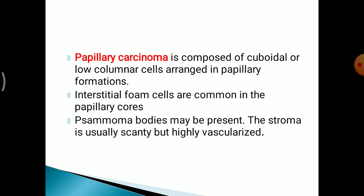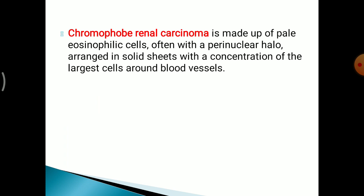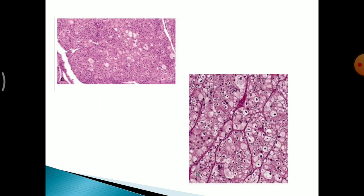Papillary carcinoma is composed of cuboidal or low columnar cells arranged in papillary formation. Interstitial foam cells are common in the papillary cores, and psammoma bodies may also be present. This H&E photograph of papillary renal cell carcinoma shows the papillary architecture. Chromophobe renal cell carcinoma is made up of pale eosinophilic cells often with a perinuclear halo, arranged in solid sheets with concentration of larger cells around blood vessels, showing enlarged irregular cells with pale eosinophilic cytoplasm and a clear perinuclear halo.